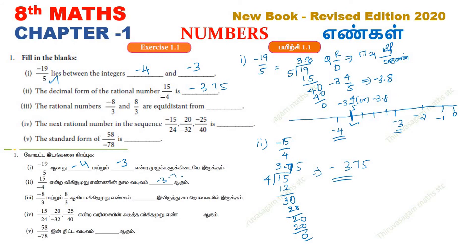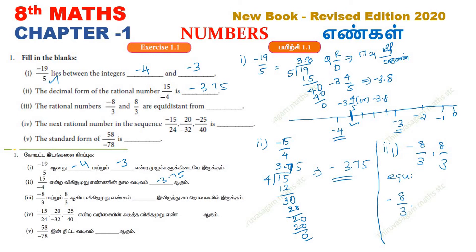This is the third sub-question. Minus 8 by 3 and 8 by 3 are in equidistant form. Minus 8 by 3 plus 8 by 3 — adding the equidistant forms gives 0.